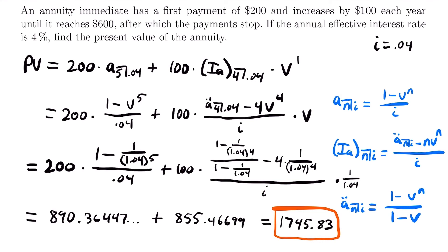That is the present value of the annuity immediate where payments start at $200 and increase by $100 every year until reaching $600. Remember: break this calculation up into different parts in your calculator, because it can get very difficult if you try to plug all of it in at once. That was the last example for this video. If you have any questions, feel free to leave them in the comments. See you next time.